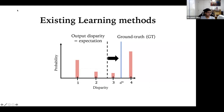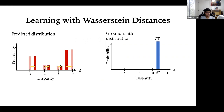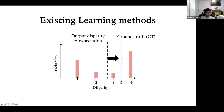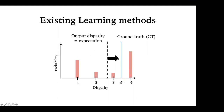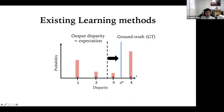Comparing learning methods for disparity estimation: existing methods, once they have an output disparity (mode or mean), compare its distance from the ground truth using simple regression — typically L1 or L2 distance. The problem is they are not using the full distribution, and they can't capture uncertainties or the behavior around object boundaries. If there are multiple peaks in the distribution, that information is discarded.